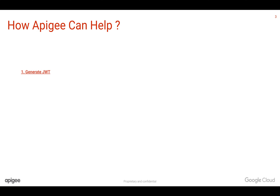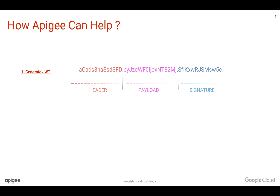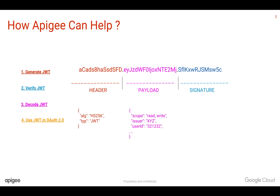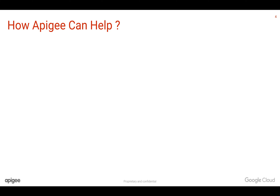How can Apigee help? Apigee can help you generate a JWT token. Apigee can help you verify the JWT token that is coming from the client. Apigee can also decode the JWT token so that you can see the payload. And you can also use the JWT token as an OAuth 2.0 token in the Apigee Edge platform.